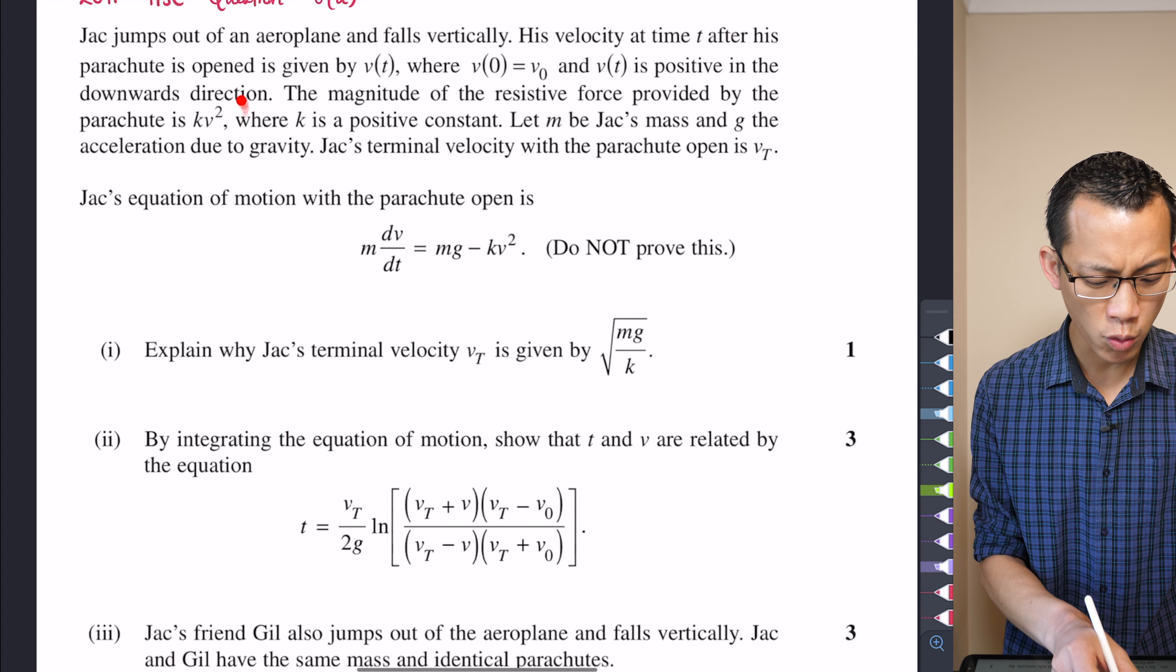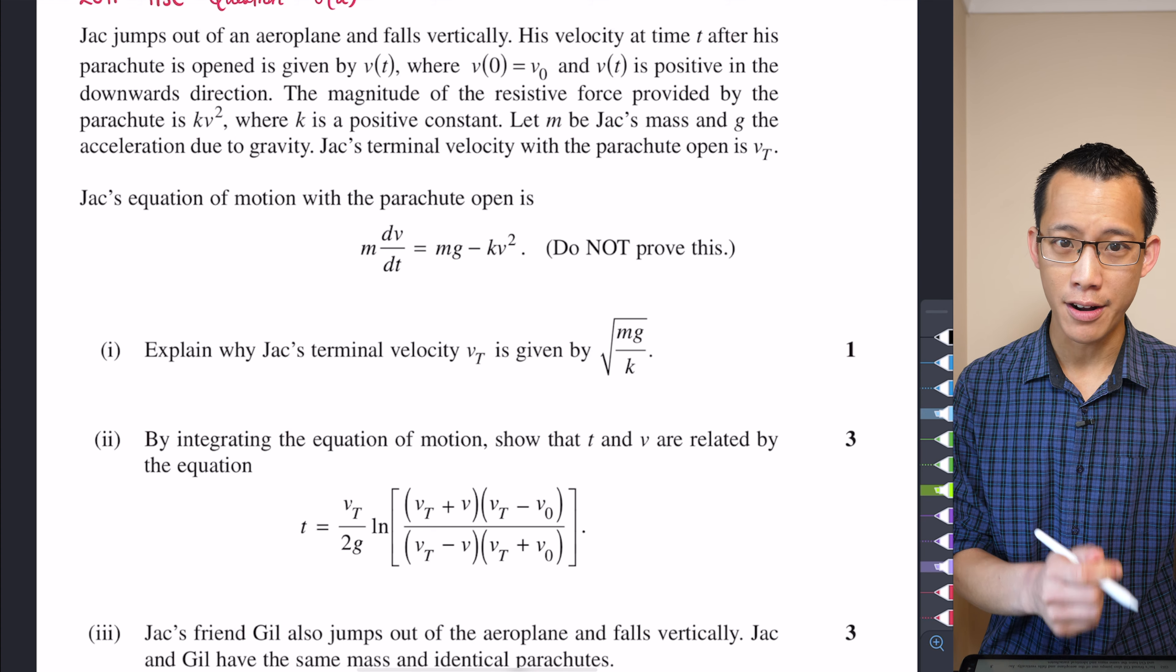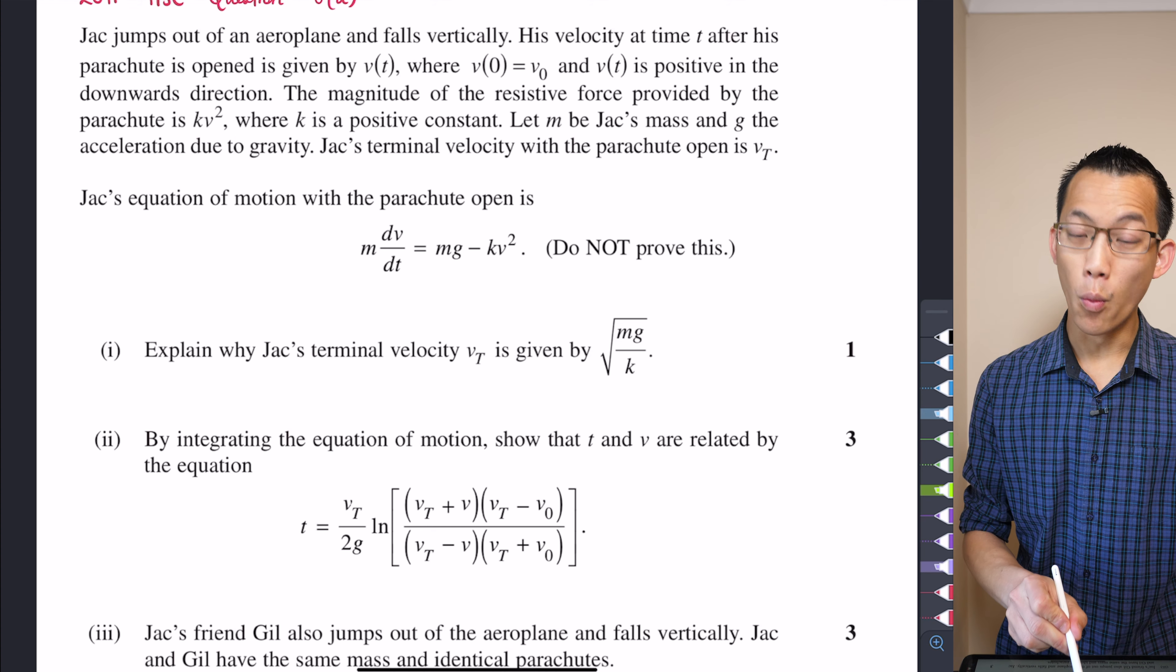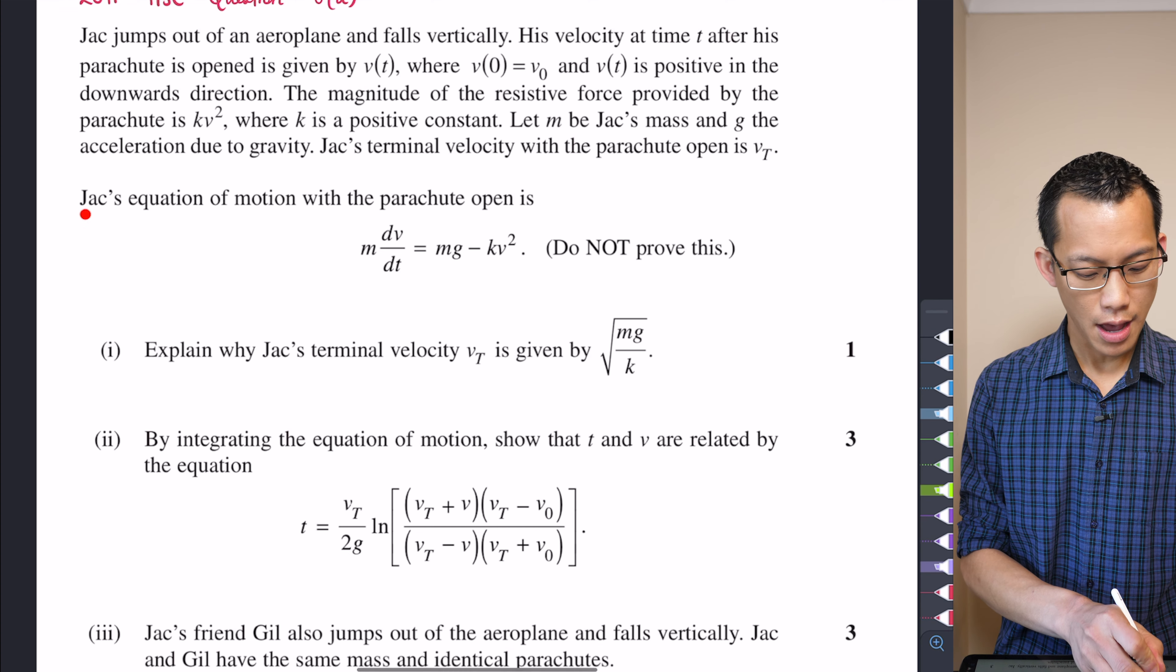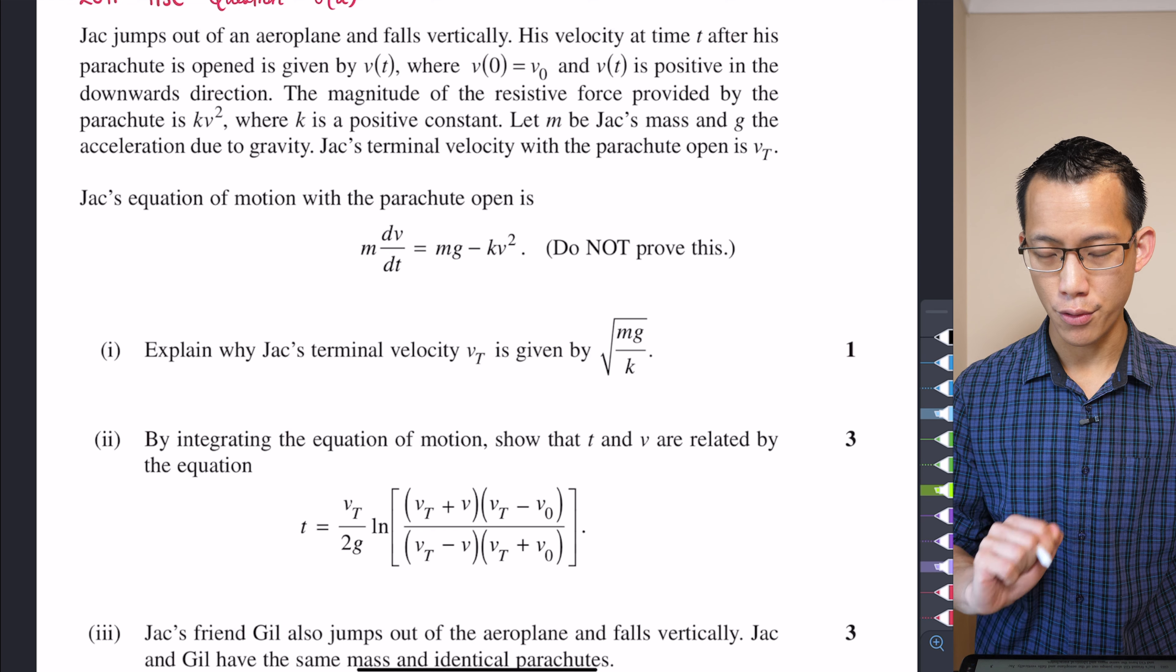And it's got this KV squared. It's a quadratic drag situation. So that's going to be important for when we put together our equations of motion, one of which they've given to us. It says Jack's equation of motion with the parachute open is here. It is. It says, do not prove this.